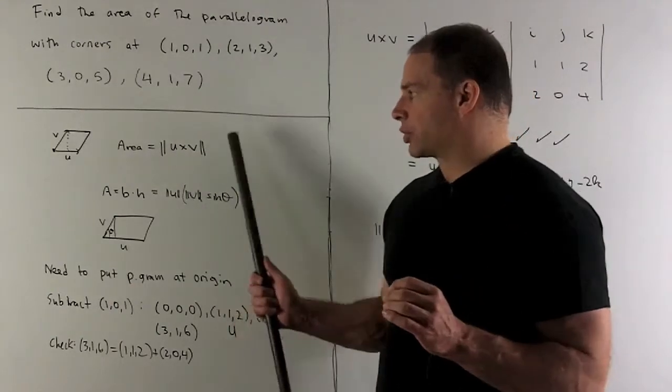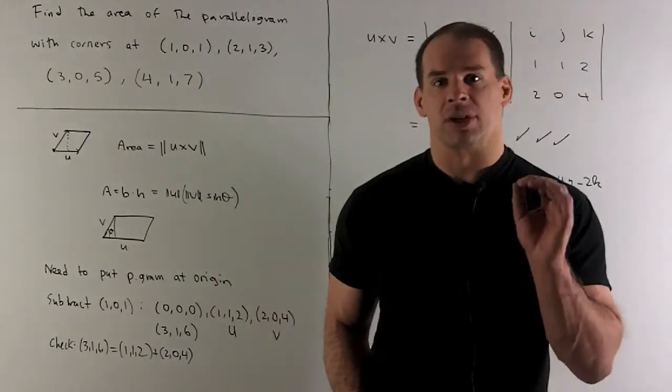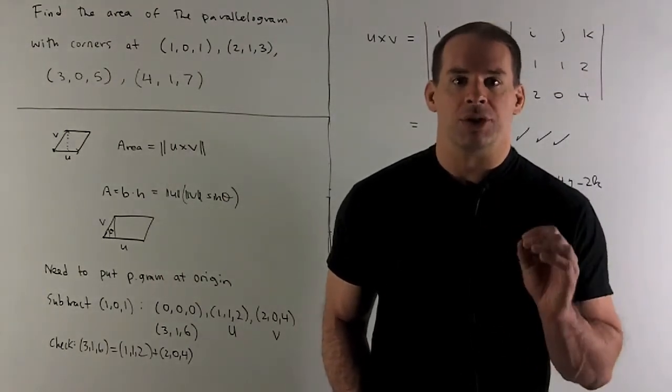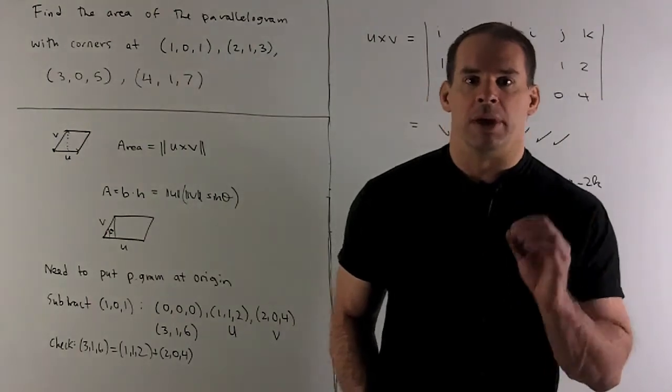So, if I can compute this cross product, then that's going to give me my area. First thing we need is we're going to need two vectors at the origin.